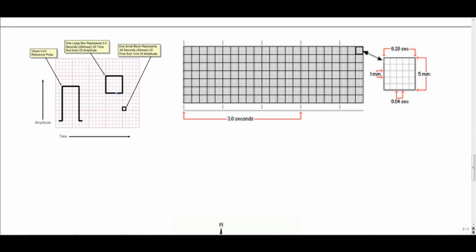Each large box consists of 5 small boxes and thus is 200 milliseconds in length. Again, length is measured in milliseconds or seconds and height is measured in millivolts. Very key in understanding EKGs to know how big these boxes are and what they represent.